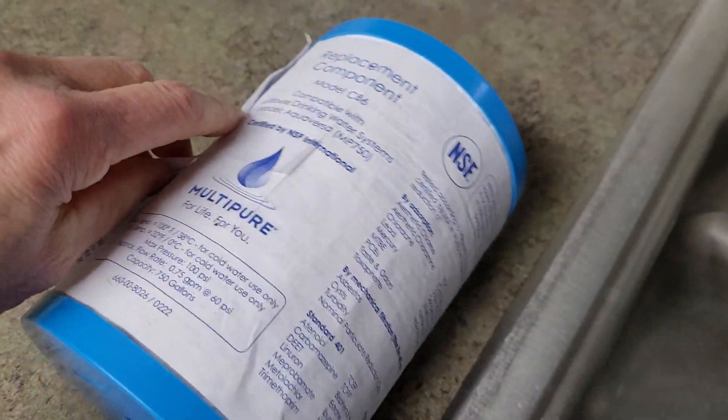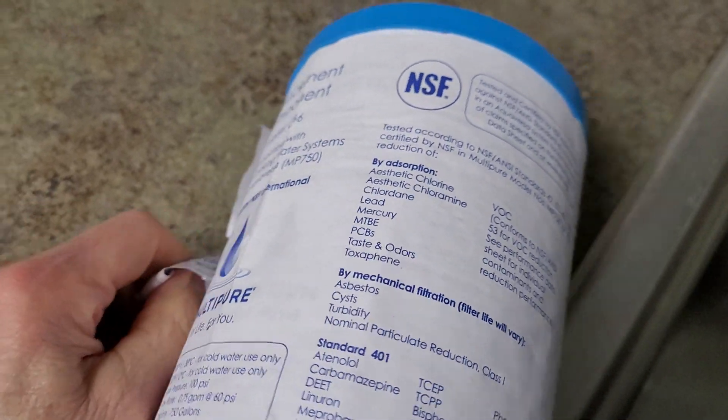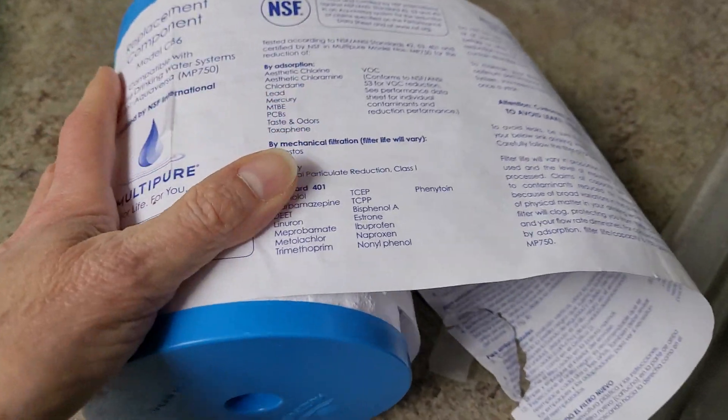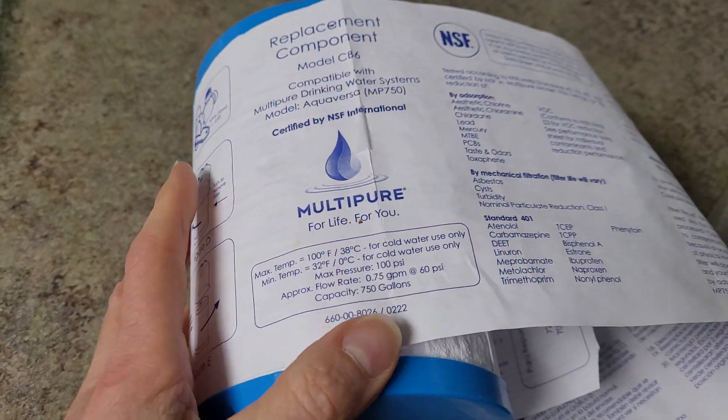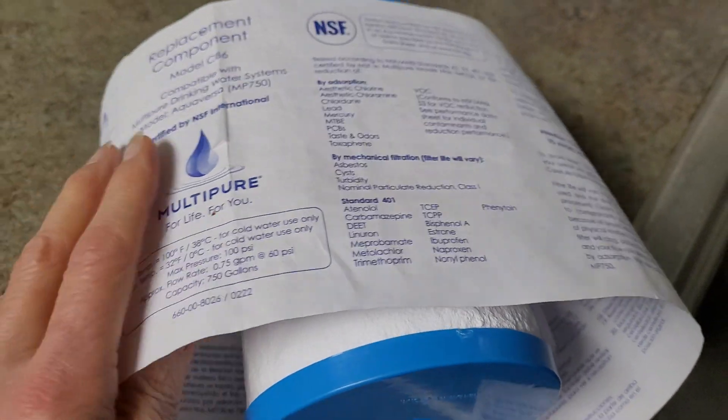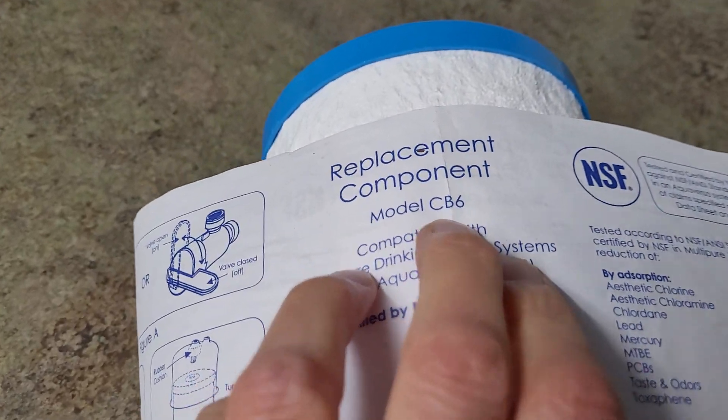This is just going to be a step-by-step to show you how to easily do this. I have an under-the-sink unit. You may have an under-the-sink or a countertop unit, and this is the Aquaversa model. It takes the CB6 replacement filter.